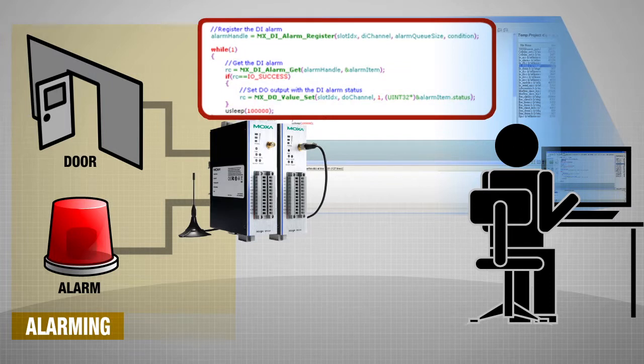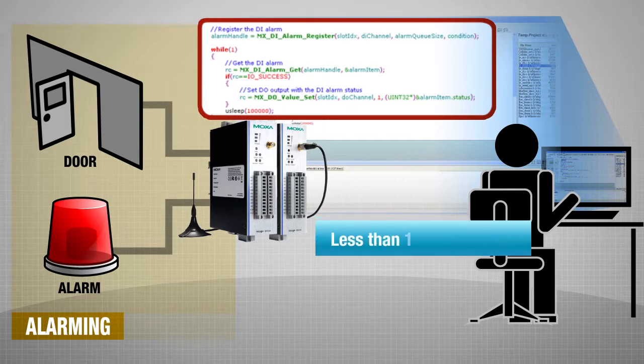In only three easy steps, the setting has been configured. By taking advantage of our IO ALARMING subsystems, the MOSAR API will decrease your sampling rate time to less than 10 milliseconds.